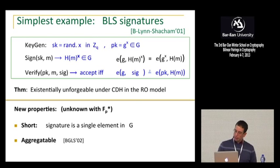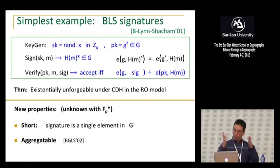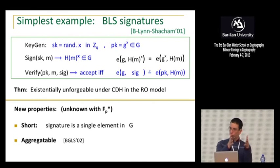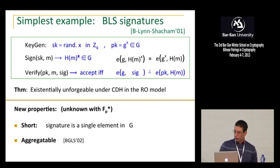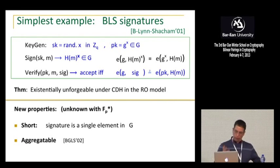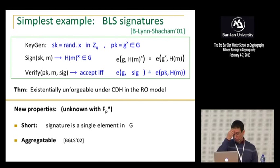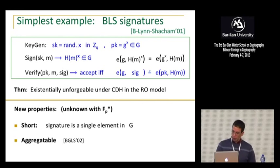So we have a really simple signature. But that by itself is actually not so interesting — we had lots of other signatures before. But first of all, you realize that the signature is really short. The signature is just one element in the source group G — just one element. In fact, these elements can be only something like 20 bytes to achieve an acceptable level of security. So we actually get a really, really short signature. In fact, this is kind of the world's shortest signature, and it's been used because of that property in a bunch of applications.